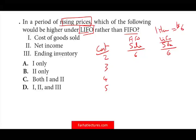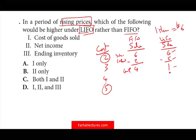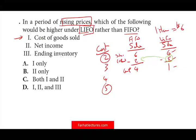The sale is the same whether it's FIFO or LIFO. Under FIFO — first in, first out — I match the $2 with the $6 sale: $6 − $2 = $4 gross profit. That's my cost of goods sold and gross profit under FIFO. Under LIFO I match the $5 with the $6: $6 − $5 = $1 gross profit. So cost of goods sold is higher under LIFO — answer one stays. Net income under LIFO would be lower, not higher, so that's out.